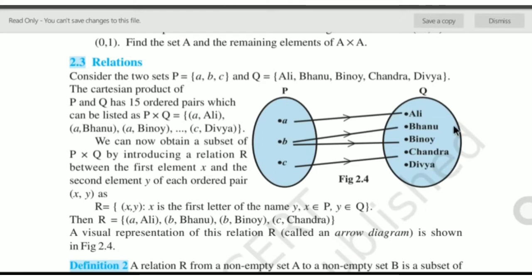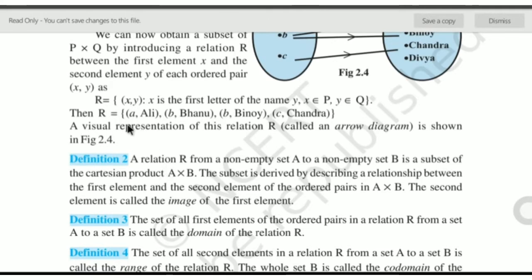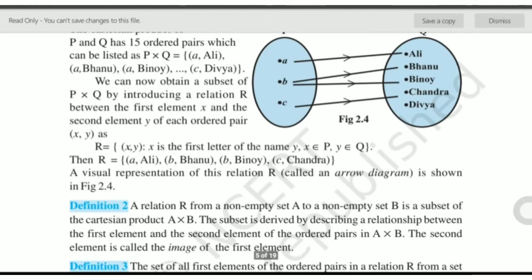What we call the arrow diagram — this is the definition of the base relation. A relation R from a non-empty set A to a non-empty set B is a subset of P cross Q, i.e., a subset of the Cartesian product A cross B. The subset is derived by describing a relationship between the first element and second element of the ordered pair. Each element of R is also an element of P cross Q, meaning set R is a subset of P cross Q.